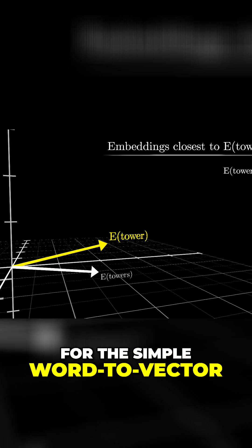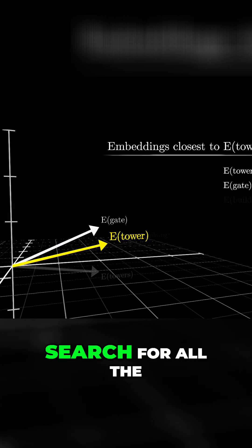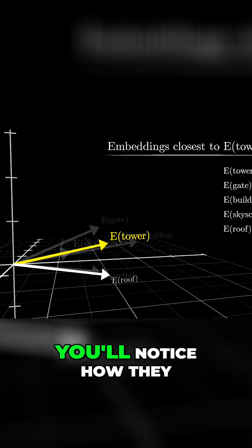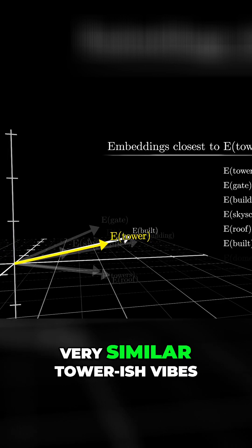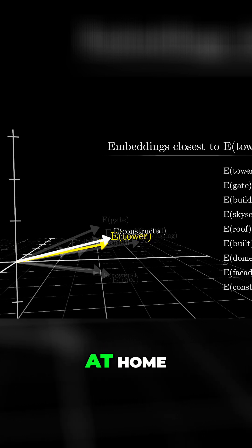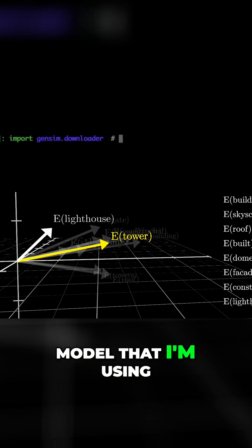For the simple word-to-vector model I'm running here, if I run a search for all the words whose embeddings are closest to that of tower, you'll notice how they all seem to give very similar tower-ish vibes. And if you want to pull up some Python and play along at home, this is the specific model that I'm using to make the animations.